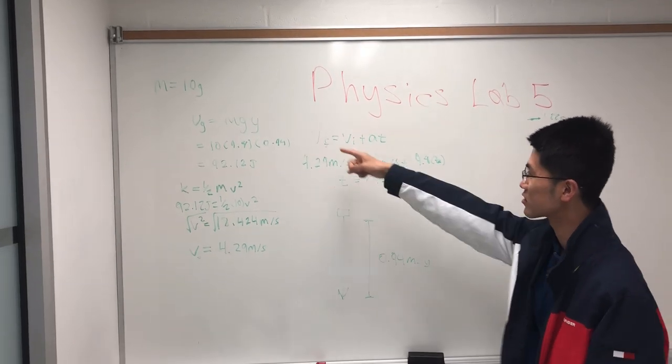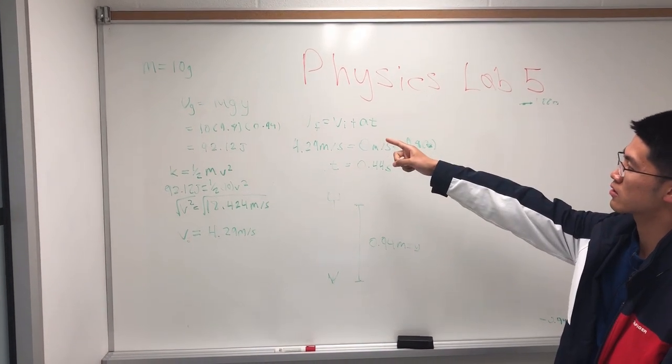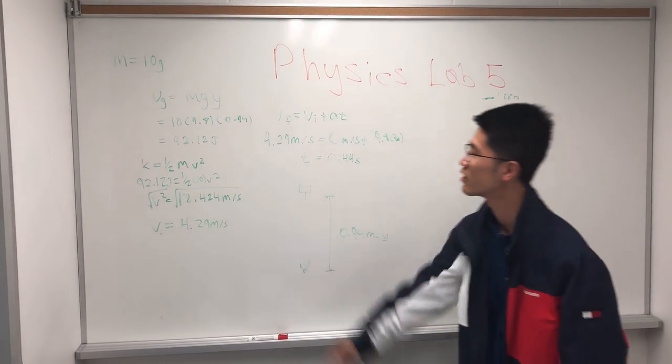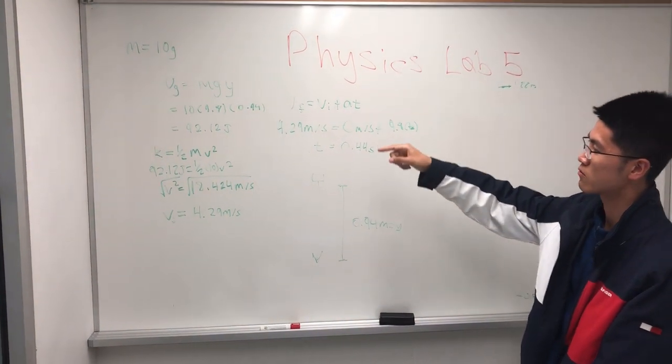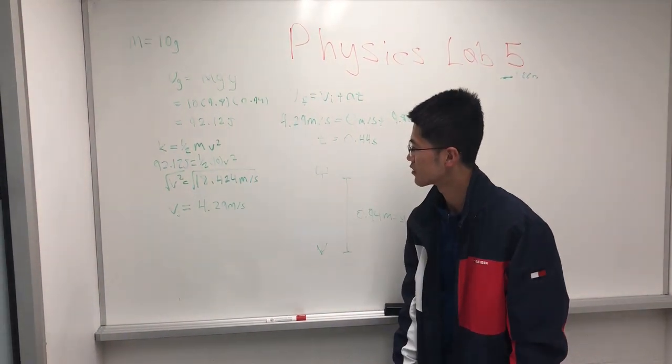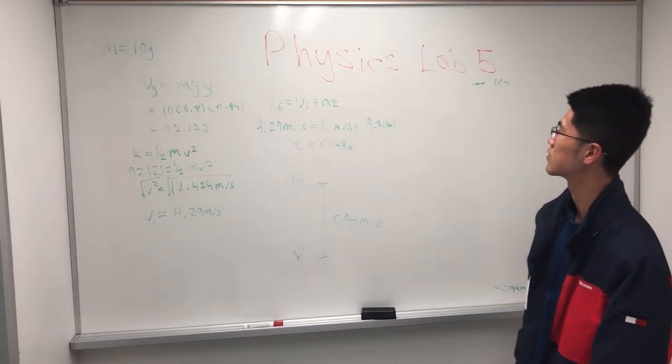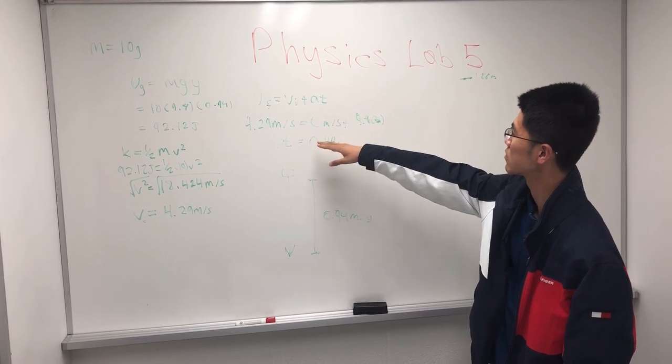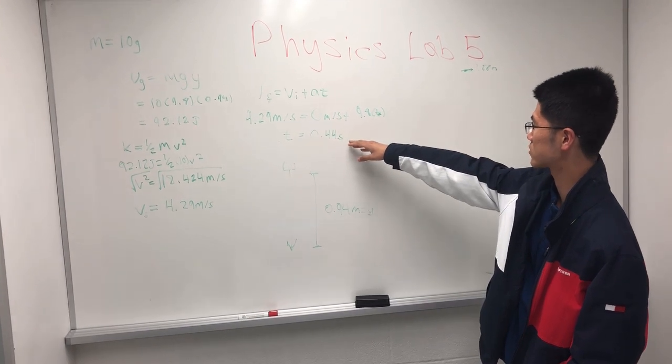So this equation is the gravitational potential energy: U = mgy equals 92.12 joules. The second equation is the kinematic equation: K = 0.5mv², and the final velocity is 4.29 meters per second. This equation is v_final = v_initial + at, and the final answer for time is 0.44 seconds.